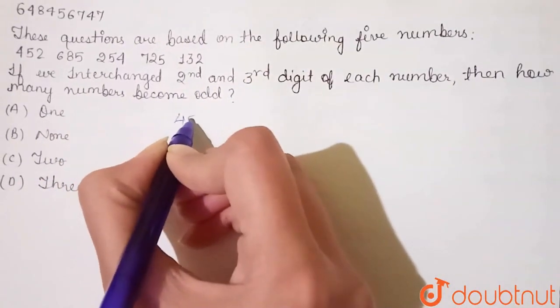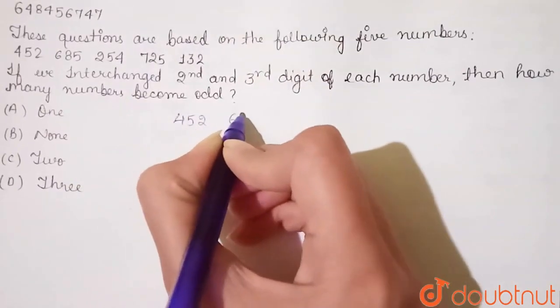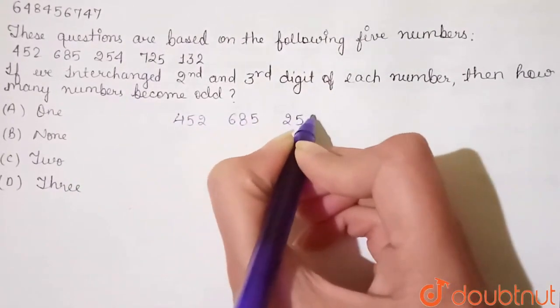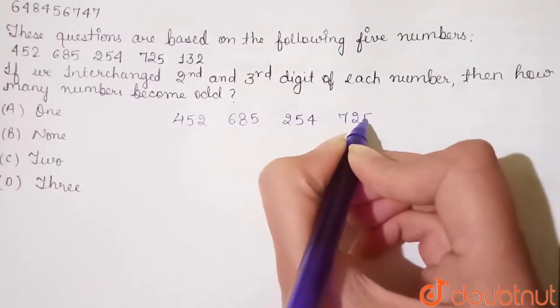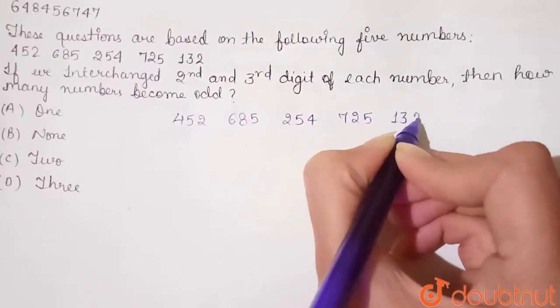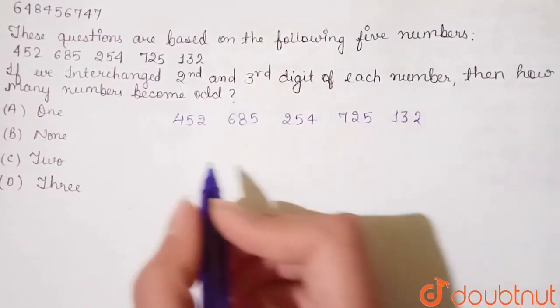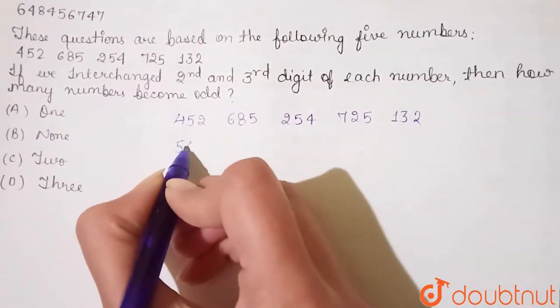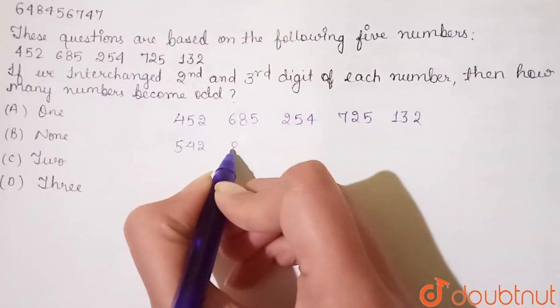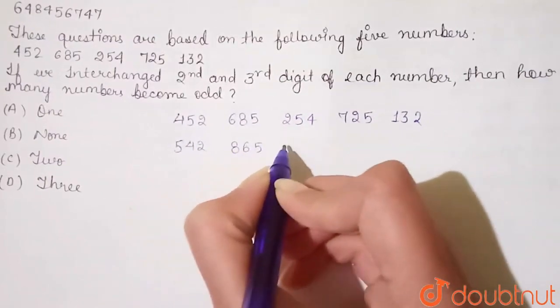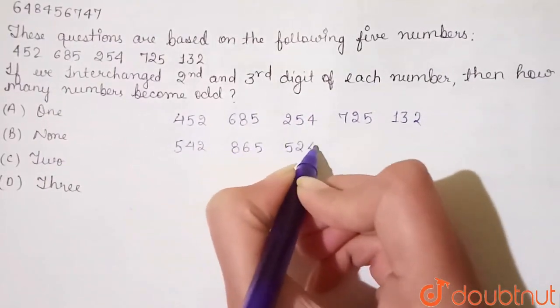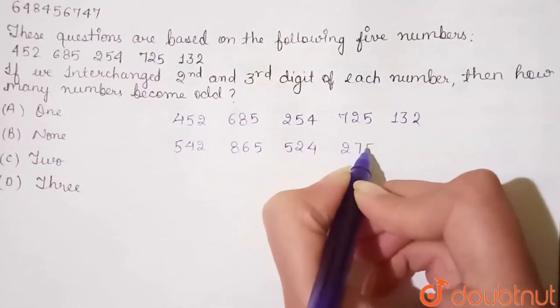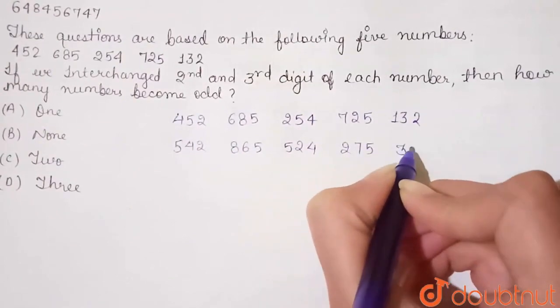The given numbers are 452, 685, 254, 725 and 132. We will interchange these numbers from the 2nd and 3rd digit. This will become 542, this 865, 524, 275 and 312.